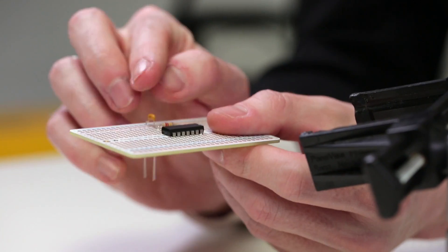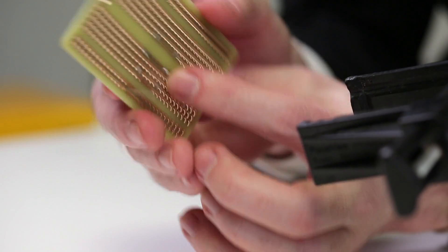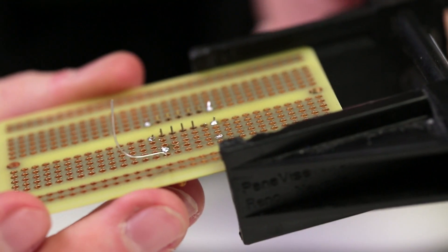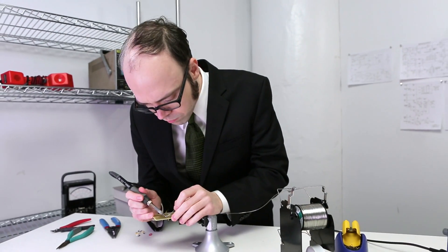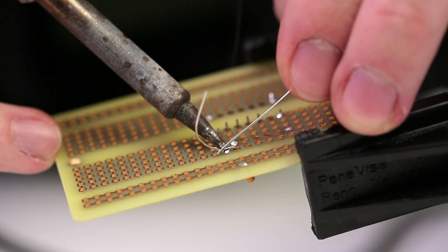Because perfboard gives us access to the bottom side of our circuit, we can use the long component leads themselves to make some of the connections, which we needed jumpers for before. Just bend the lead over and solder its end to wherever it needs to connect.